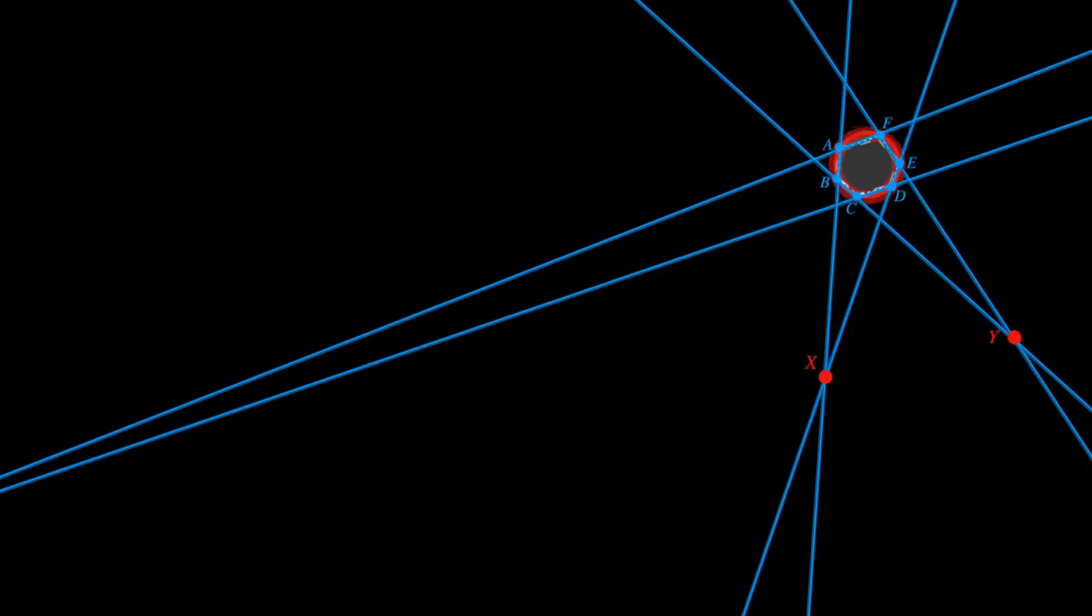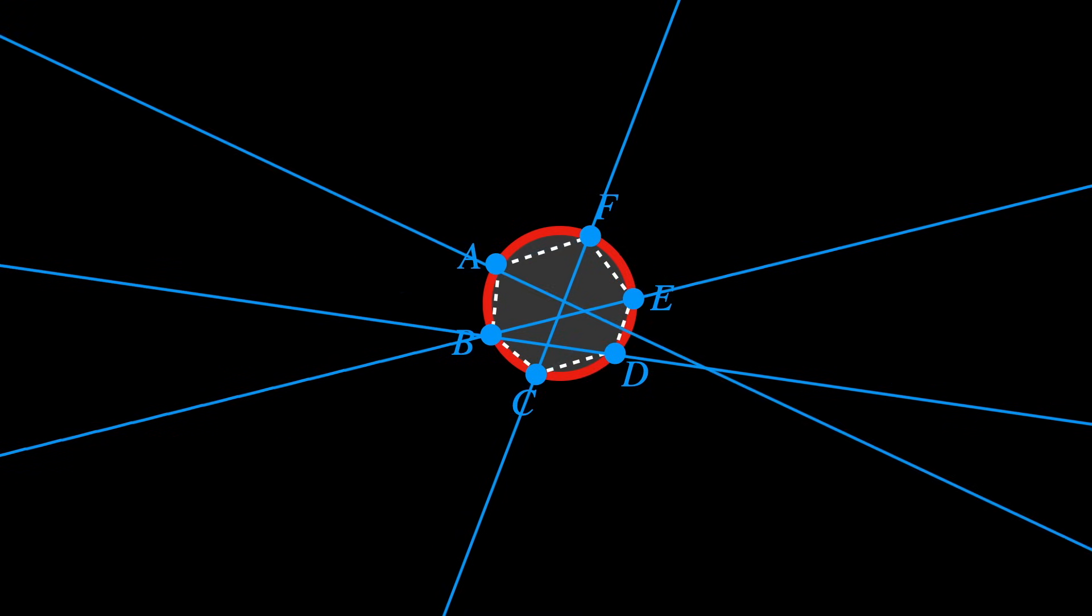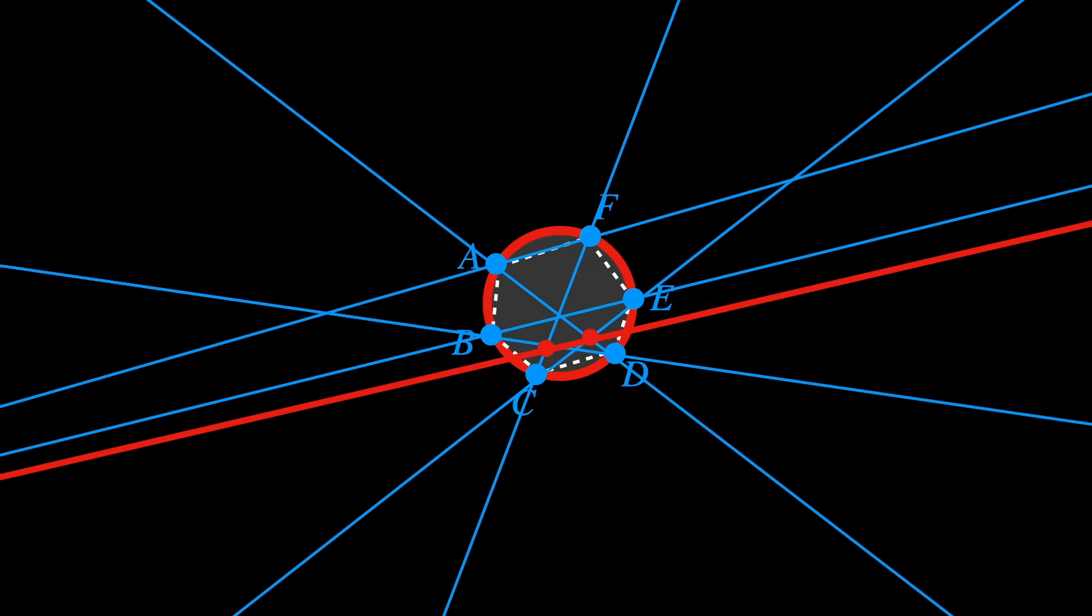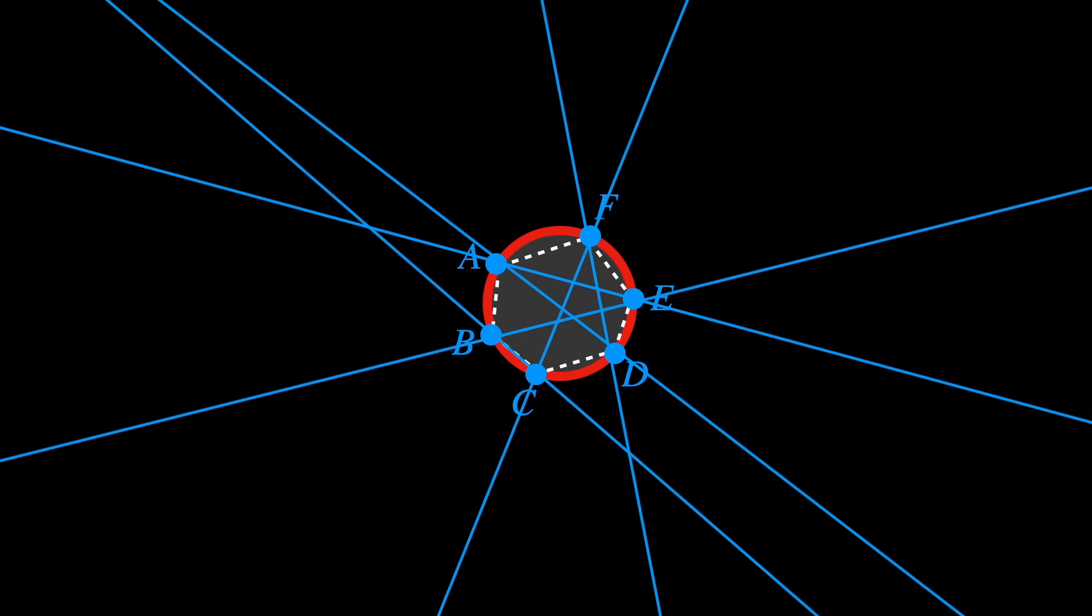But here's a fun fact. There are actually 60 different ways of connecting the lines, resulting in 60 different Pascal's lines. The point is, no matter how you connect them, Pascal's line will pass somewhere.